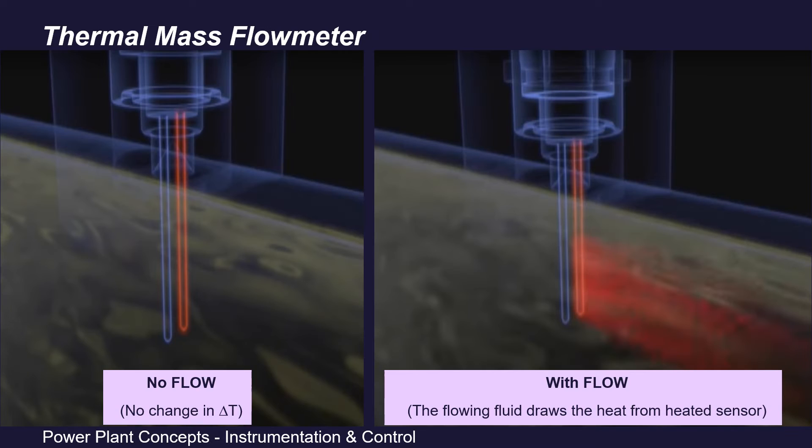Then if there is no flow, the differential temperature between the two temperature sensors does not change. It means this delta T remains constant if there is no flow.